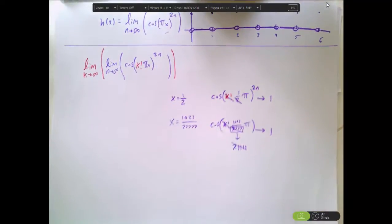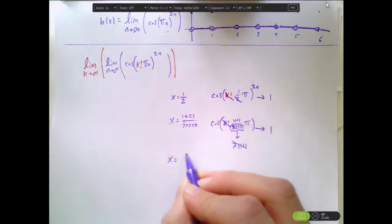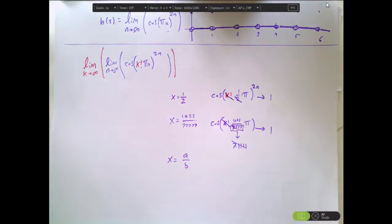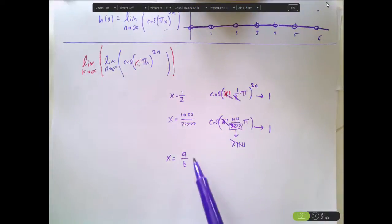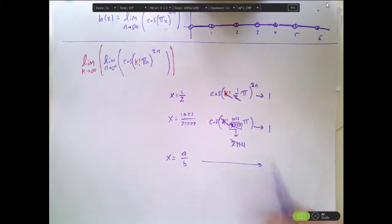So pay attention to what I just said here. I said it doesn't matter what the denominator is. So x could be any rational number at all where a rational number is written a/b with a and b both integers. So for any rational number at all, this k factorial is going to eventually make it so that the output is 1.